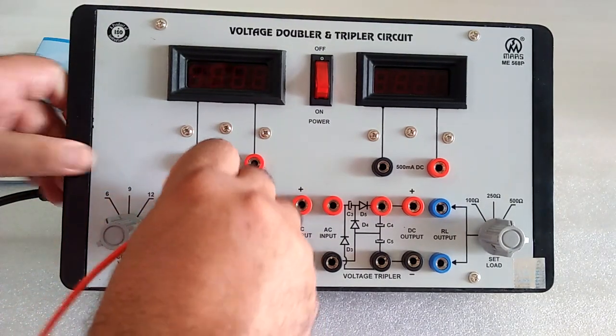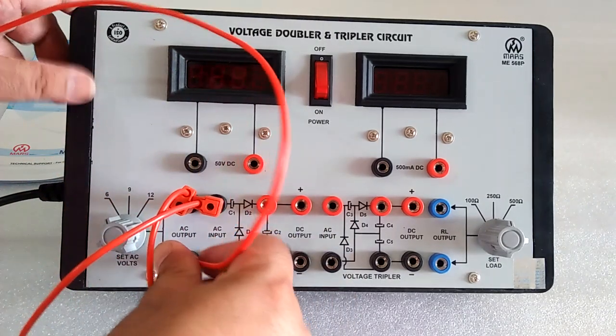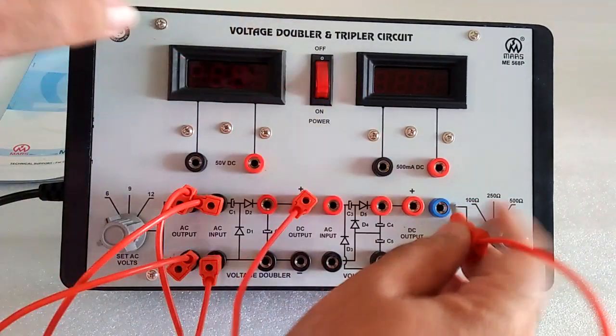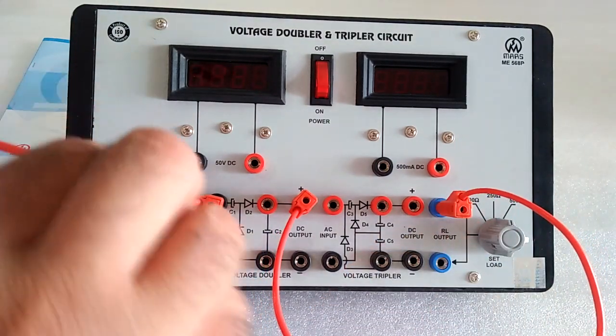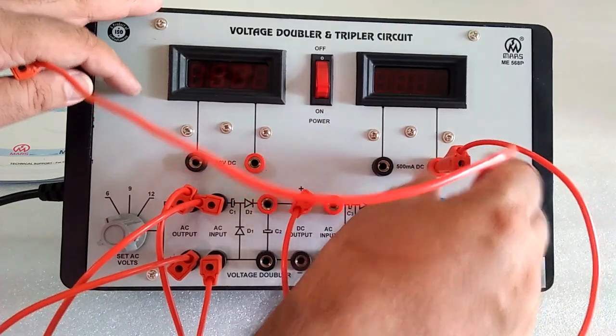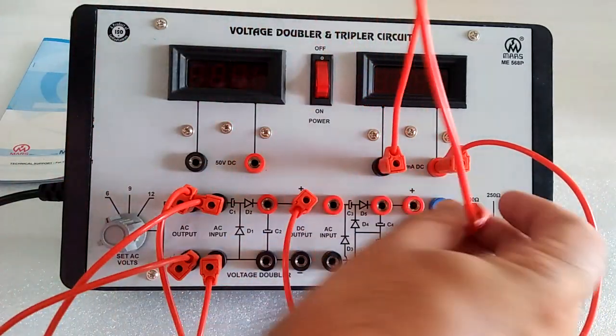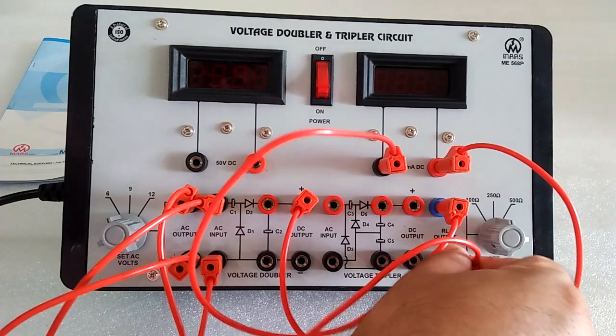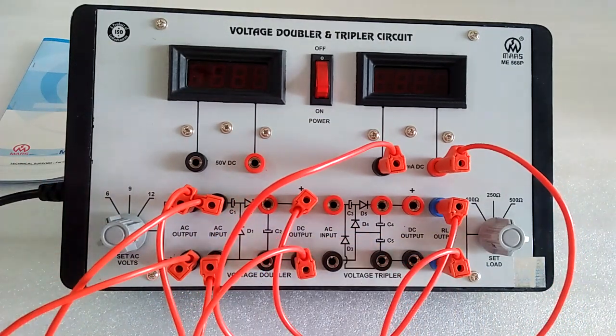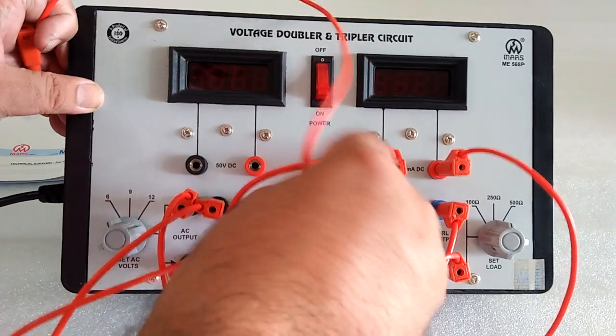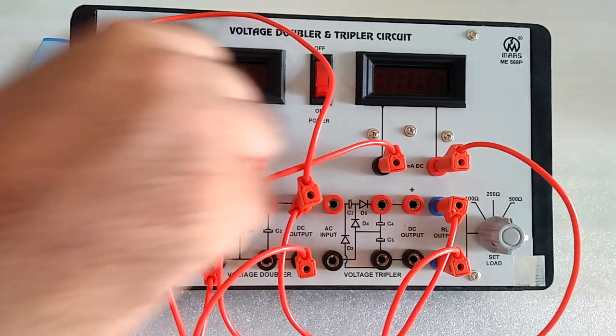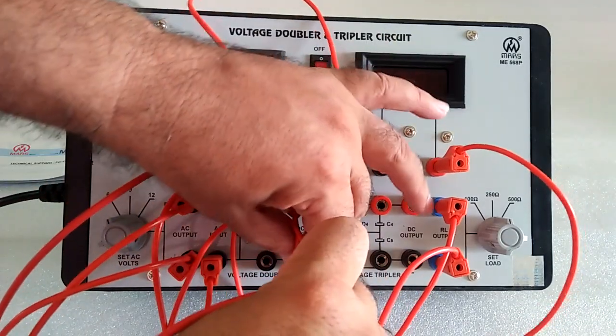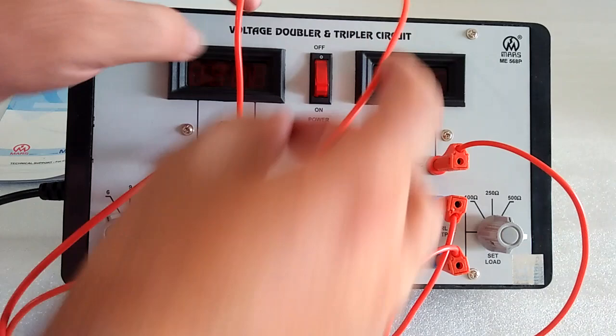Connect the AC output to the current meter first, then make the current meter connections as shown in the circuit diagram.